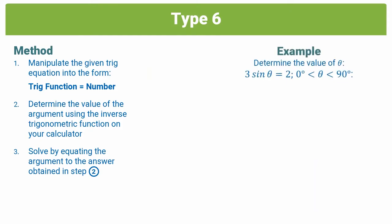So the example we are given here is 3 sin θ = 2, and we are told that θ is between 0 and 90 degrees, and we're asked to find the value of θ.